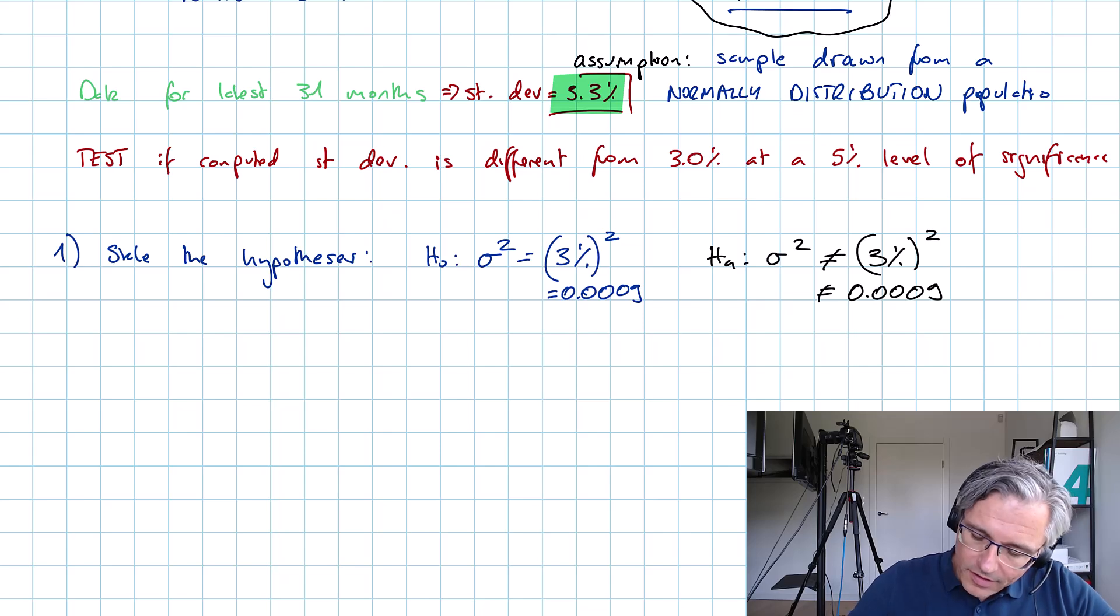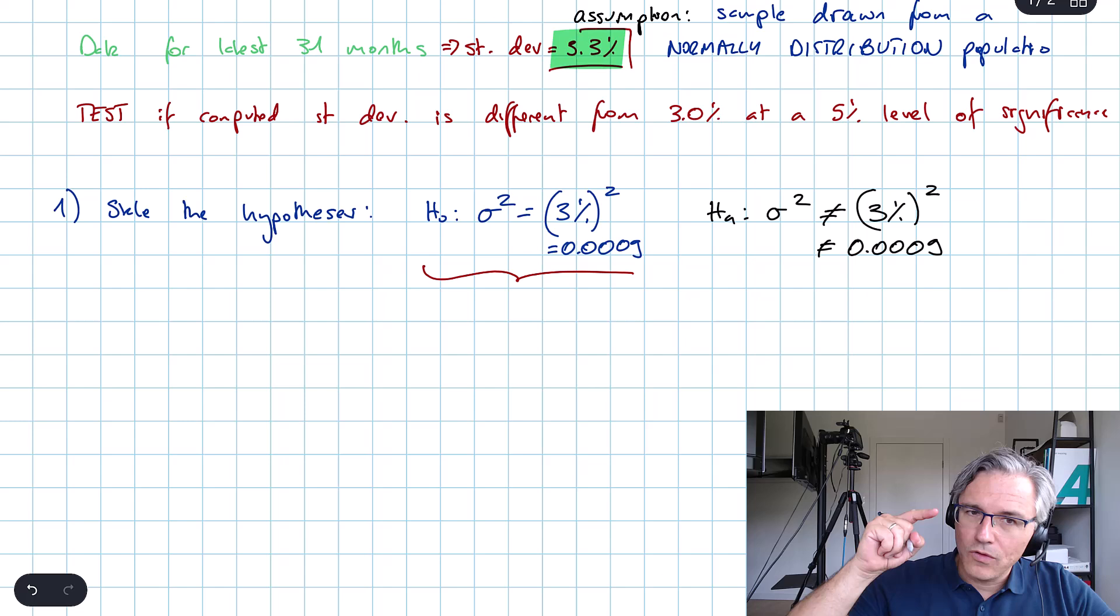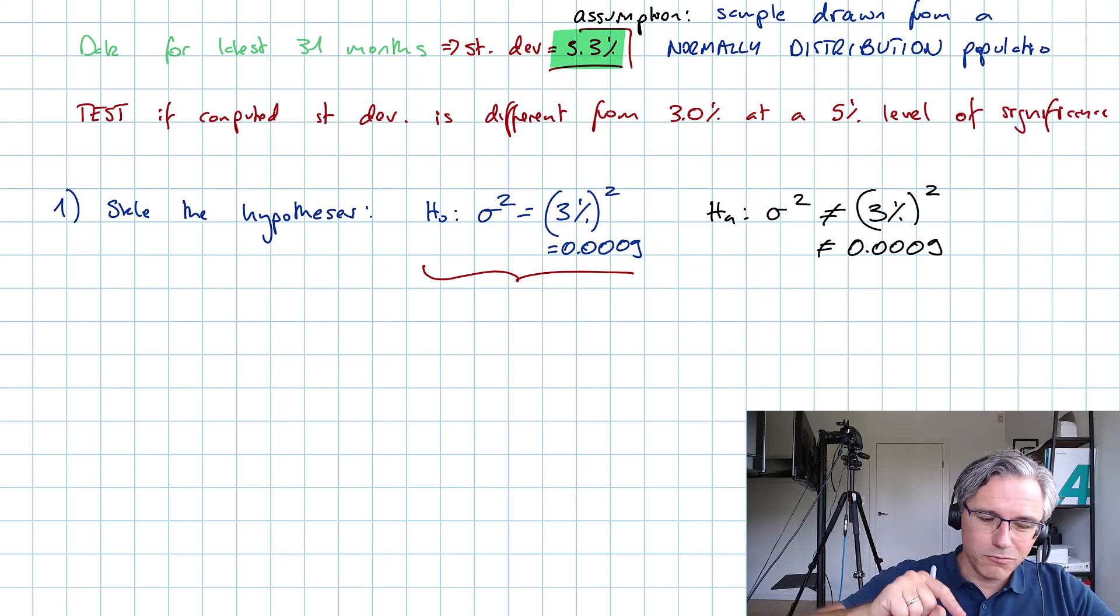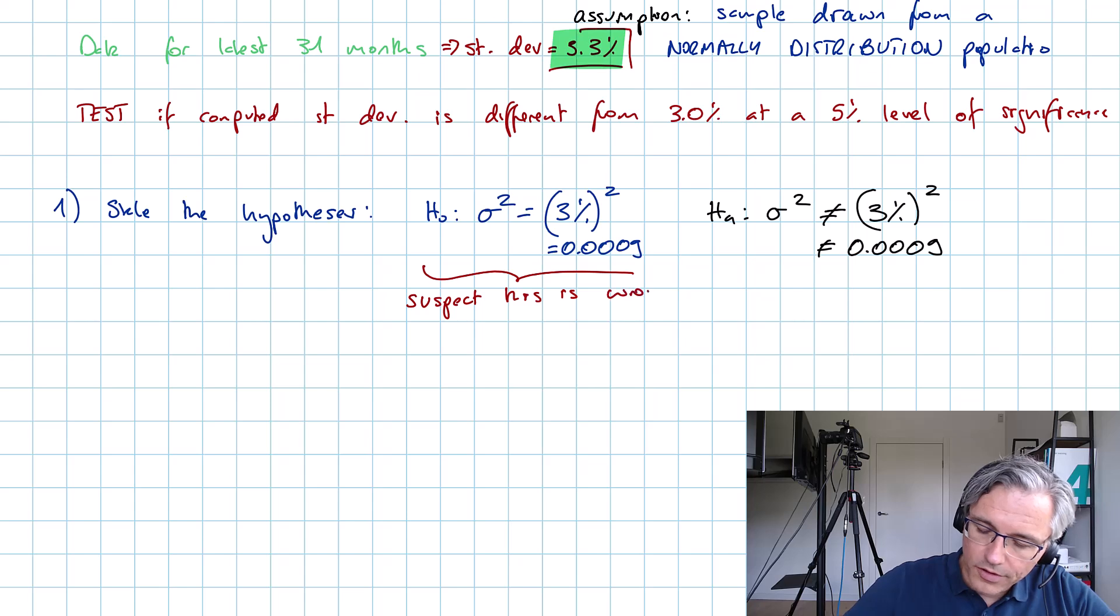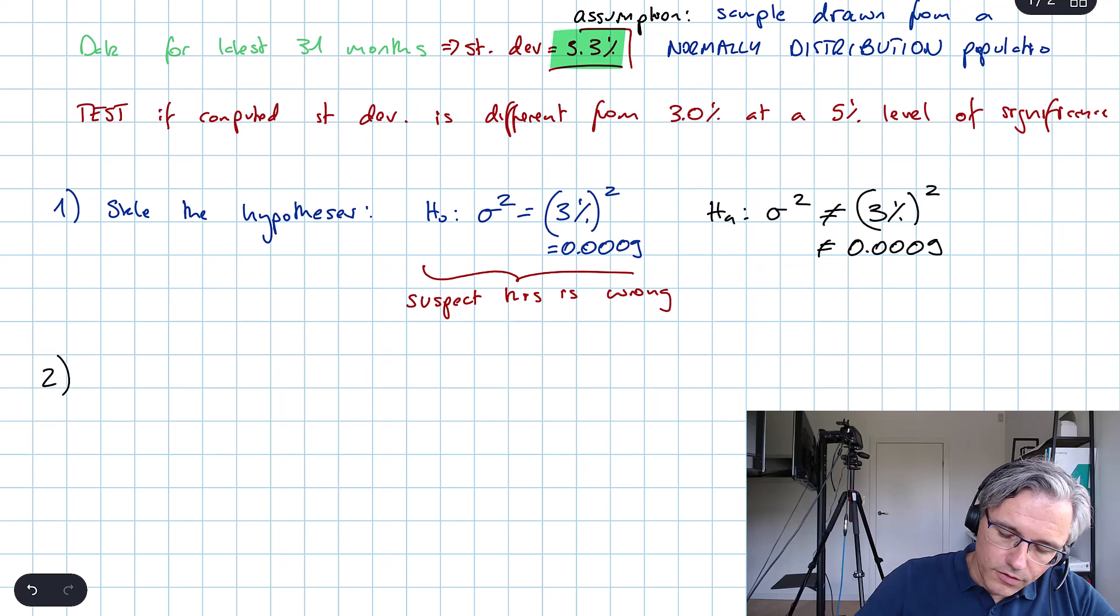My alternative hypothesis is going to be that the variance of this fund is not equal to 3 percent squared, so not equal to 0.0009 when we express things in decimal form. The null hypothesis is the statement that we suspect is wrong. We suspect this is wrong. We never write it down as the null hypothesis.